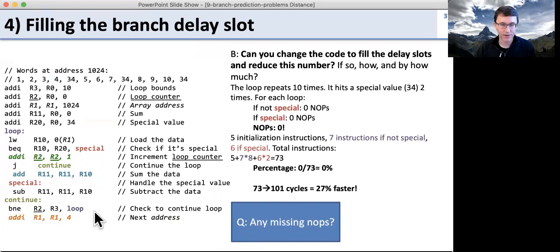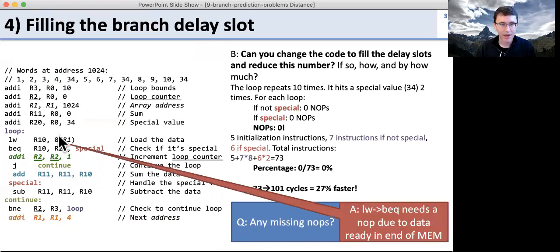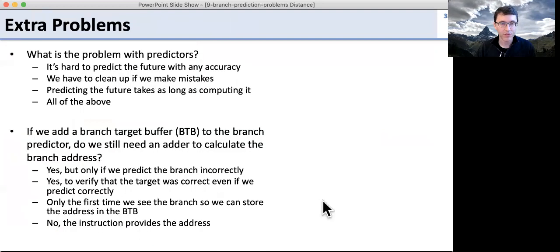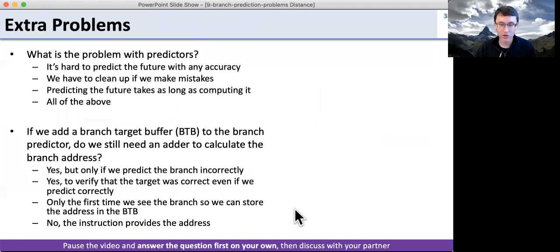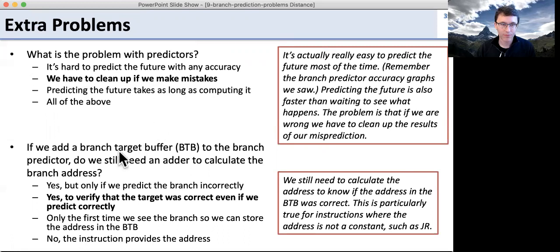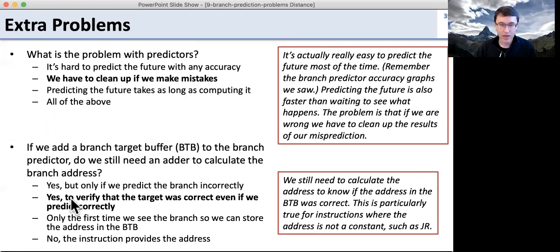Are there any missing no-ops? The answer is yes — there's a missing no-op between the load word and the instruction that uses it. We need a cycle after a load before we can use that data, so we actually need a no-op there if we're going to do this correctly. Also, regarding branch target buffers: even if we add one to the branch predictor, we still need to calculate the branch address every time — even when the predictor is right — because we need to verify we jump to the right place. The predictor just gives us the results earlier.